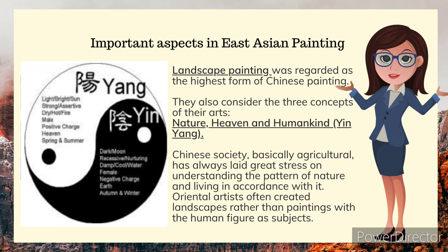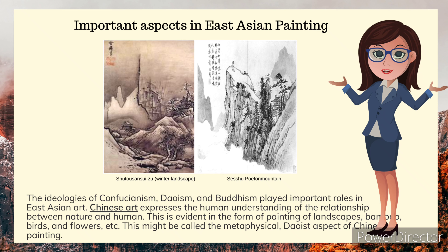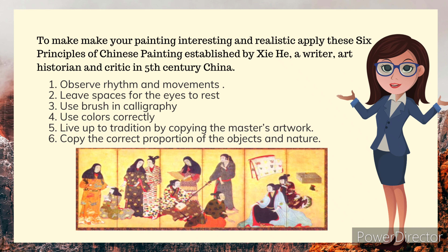Oriental artists often created landscapes rather than paintings with the human figure as subjects. Silk was often used as the medium to paint upon, but it was quite expensive. When Han court eunuch Cai Lun invented paper in the first century AD, it provided a cheap and widespread medium for painting. The ideologies of Confucianism, Daoism, and Buddhism played important roles in East Asian art. Chinese art expresses the human understanding of the relationship between nature and human, evident in landscape paintings, bamboo, birds, and flowers — the metaphysical Daoist aspect of Chinese painting.